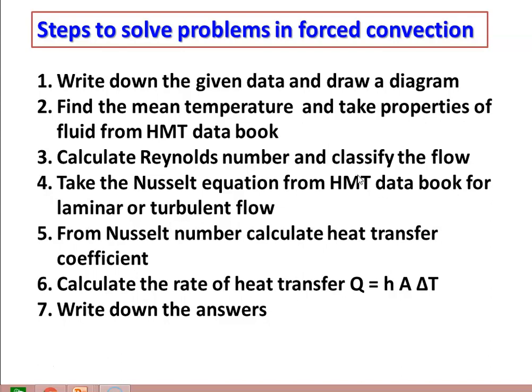Then calculate the Reynolds number and classify the flow as laminar or turbulent. When the Reynolds number is less than 2300, the flow is laminar; when greater than 2300, the flow is turbulent. Take the Nusselt equation from the heat and mass transfer data book for the laminar or turbulent flow. From the Nusselt number, calculate the heat transfer coefficient and then calculate the rate of heat transfer.